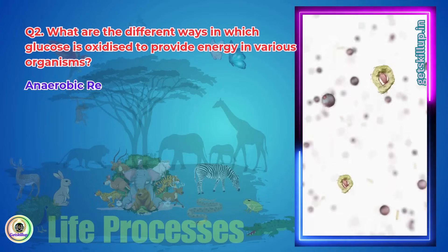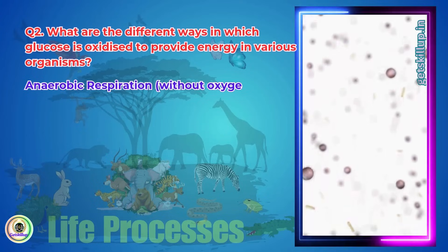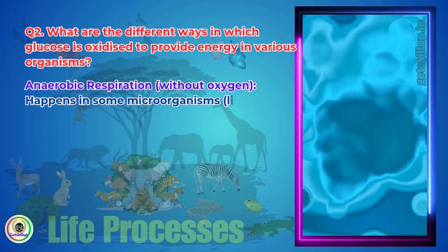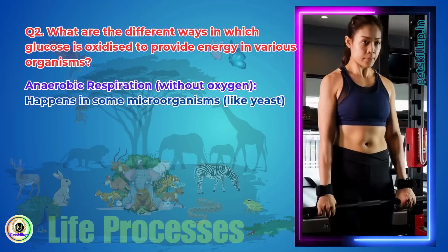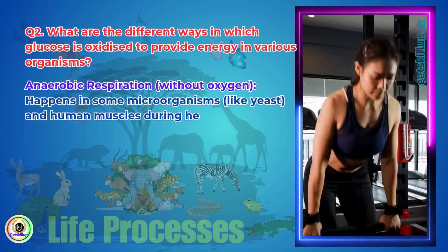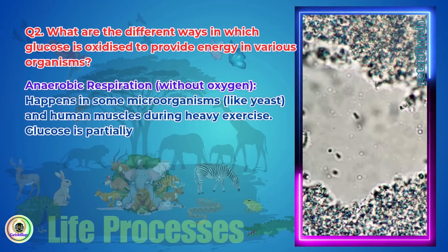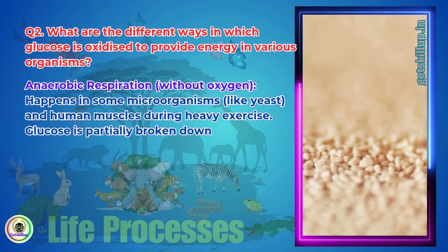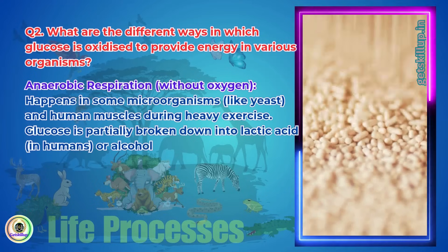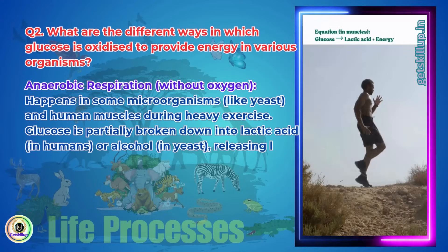Anaerobic respiration, without oxygen, happens in some microorganisms like yeast, and in human muscles during heavy exercise. Glucose is partially broken down into lactic acid in humans, or alcohol in yeast, releasing less energy.